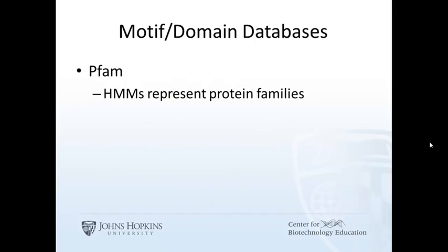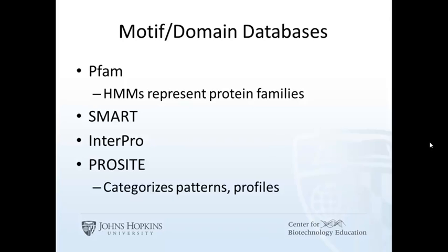Here are a few databases of protein signatures. PFAM is based on hidden Markov models, or HMMs, and are quantitative. The SMART database is also based on HMMs. InterPro is a database with a search mechanism for searching other databases, including PFAM and SMART. ProSite has both patterns and profiles — the patterns use regular expressions, and the profiles use the position-specific scoring matrix, or POSM.